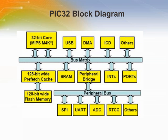In this block diagram, notice that the PIC32 uses 128-bit wide flash memory. Such a wide memory path is specifically designed to increase the instruction throughput and improve overall CPU performance. To further enhance the performance, the PIC32 employs a 128-bit pre-fetch cache module.